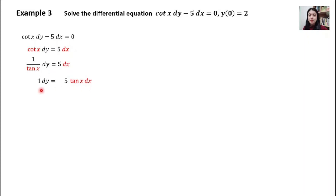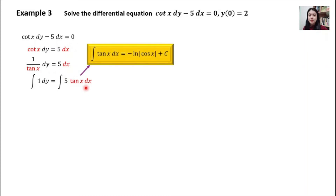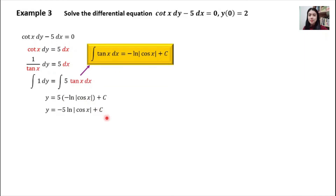Integrate both sides. For the integral of tan x, use the formula. For the left-hand side, integrating with respect to y gives y. For the right-hand side, using the formula gives negative ln|cos x|. Simplifying, we have the general solution for this example.